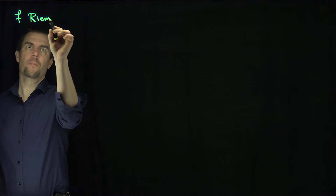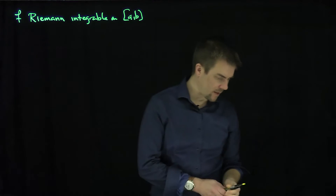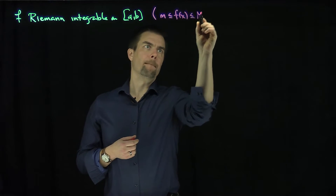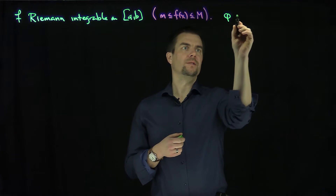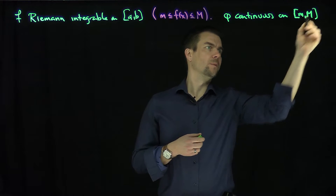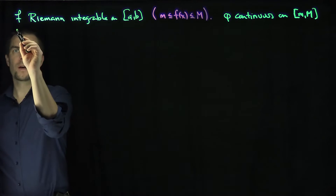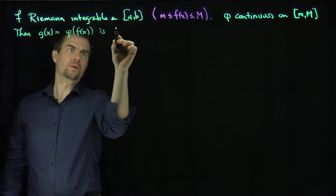Hello students. This video will prove that the composition of a continuous function with a Riemann-integrable function is also Riemann-integrable. If f is Riemann-integrable on [a,b], then f is automatically bounded — stuck between a little m and a big M. If phi is continuous on [m, M], then we can prove the composition phi of f of x, which we call g of x, is Riemann-integrable as well.